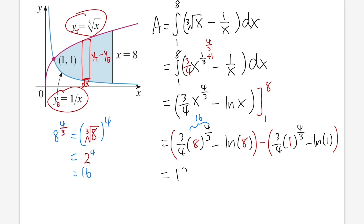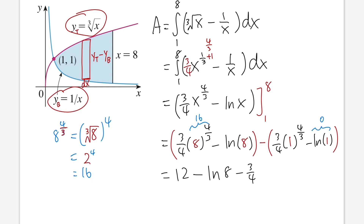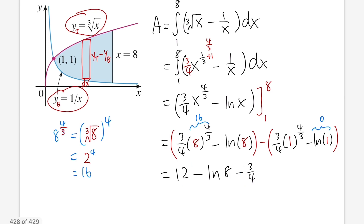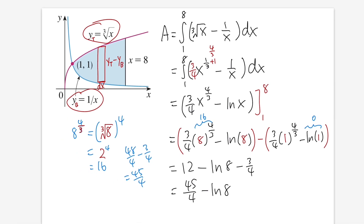So 8 to the 4/3 is 16, and 16 times 3/4 is 12. The first part equals 12 minus ln 8. Then 1 to the 4/3 is just 1, times 3/4 gives 3/4. And ln 1 is 0, so it drops out. Finally, 12 minus 3/4: rewrite 12 as 48/4 minus 3/4 equals 45/4. The answer is 45/4 minus ln 8.